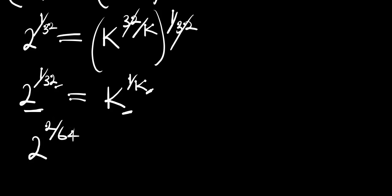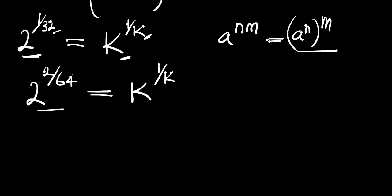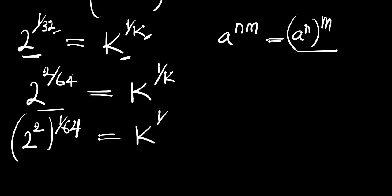If 2 cancels itself, 1 cancels 64, we are going to have 32, so we haven't really changed anything. This equals k raised to the power of 1 over k. Now we make use of this identity: if you have a raised to the power of n times m, this equals a raised to the power of n, all to the power of m. Applying this identity, we have 2 raised to the power of 2, all to the power of 1 over 64, and this equals k raised to the power of 1 over k.